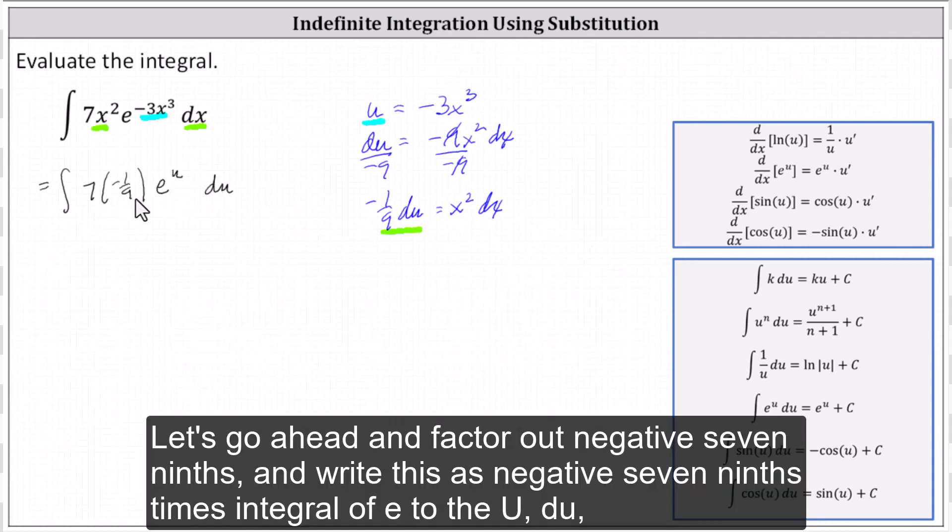Let's go ahead and factor out -7/9 and write this as -7/9 times integral of e to the u du.